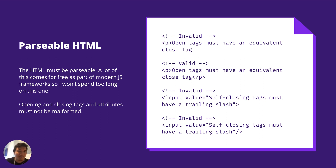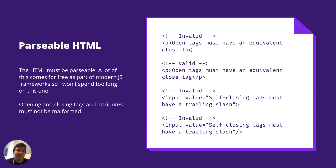The HTML must be parsable. A lot of this comes for free as part of modern JS frameworks. Opening and closing tags and attributes must not be malformed. Here you can see there is no end tag — that's just going to throw off the tag stack. In the second example, we don't have a trailing slash. Your JS framework should probably handle that for you, but be careful if you're handcrafting HTML or using an older framework.